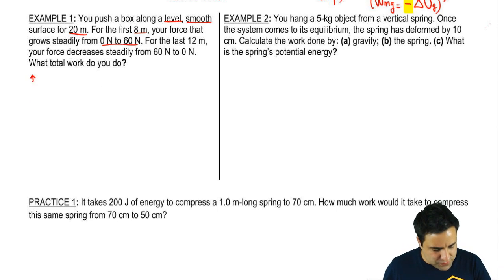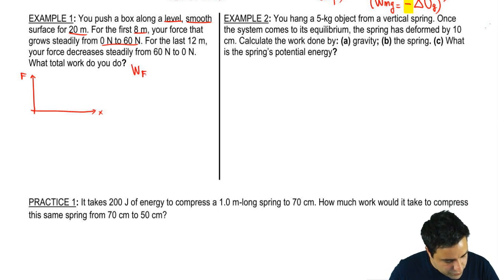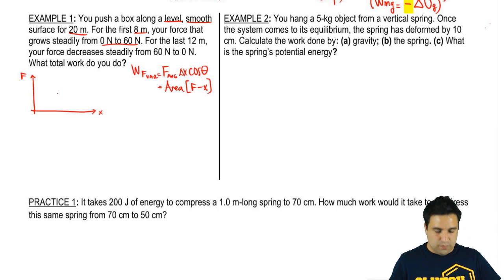So what I'm going to do here to help us visualize this is I'm going to draw a little force as a function of position so we can show this force changing. And it's a variable force, so I need you to remember that the work done by a variable force is the average force delta x cosine of theta, or it's the area of the F(x) graph. So by graphing F(x) I can simply find the area of that graph to find the total work that your force does.